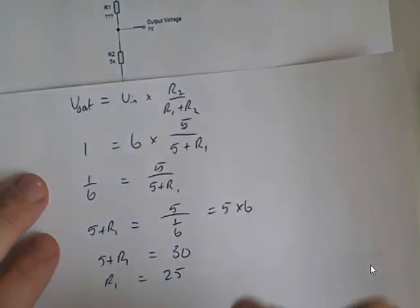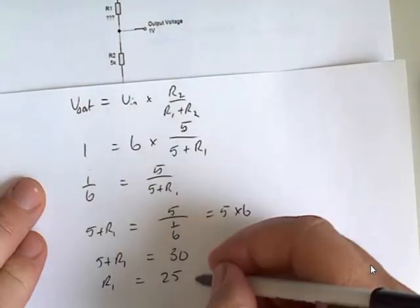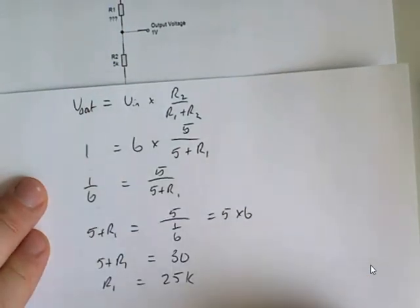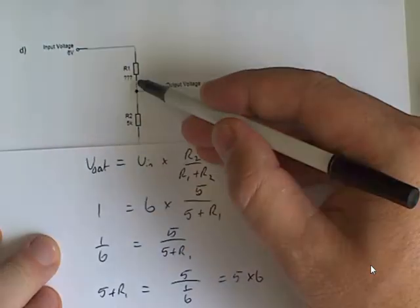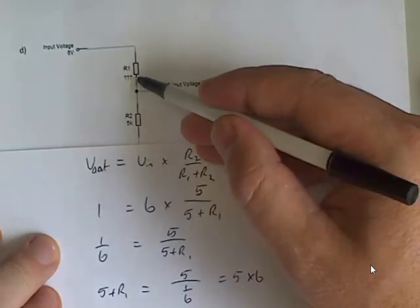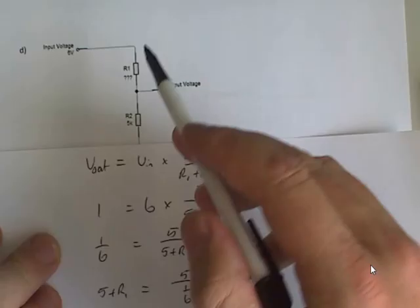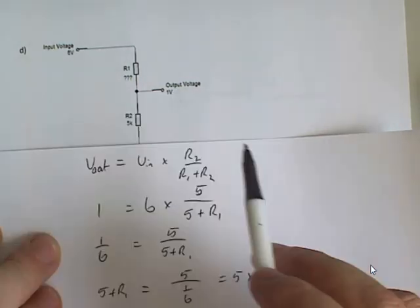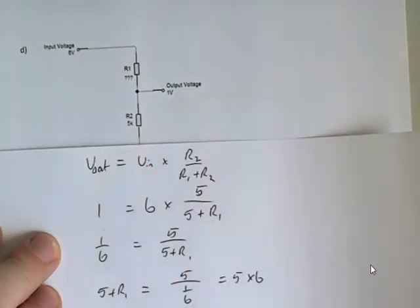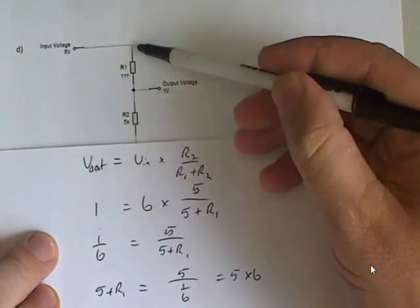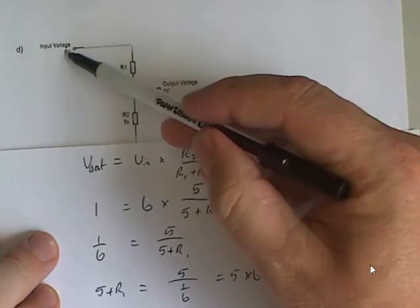And because I was working in K, that's got to be K. So if I had a resistor that is 25K and a 5K, the output would be 1 volt from a 6 volt input. Which makes sense when you think about it. This resistance is quite small in comparison to the whole. This voltage is quite small in comparison to the input.